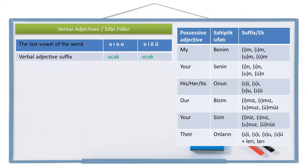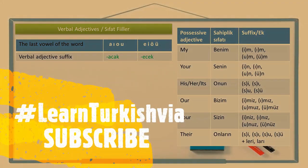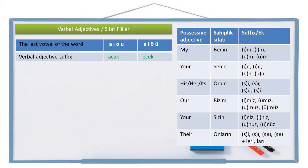Alright, now let's see another suffix. This time it's about the future. We remember this suffix from future tense: -acak or -ecek, which alternates according to two-way vowel harmony. So the action will be in the future this time.